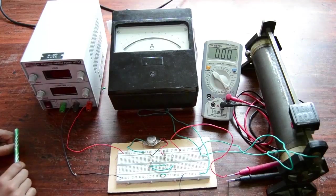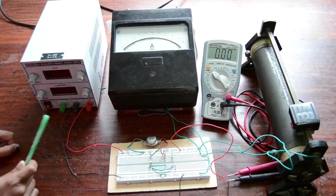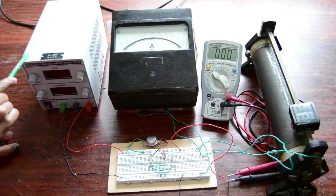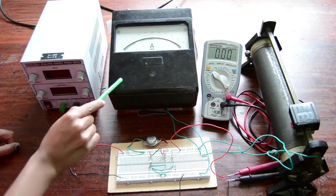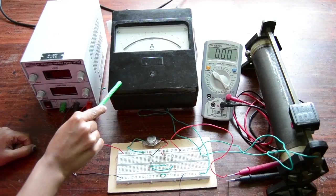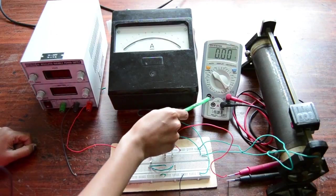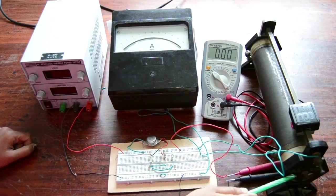These are the equipments used for setting up the circuit. This is a DC regulated variable power supply of 0 to 30 volt range. This is an ammeter of the range 0 to 2 ampere. This is a multimeter and this is a 1 kilo ohm rheostat.